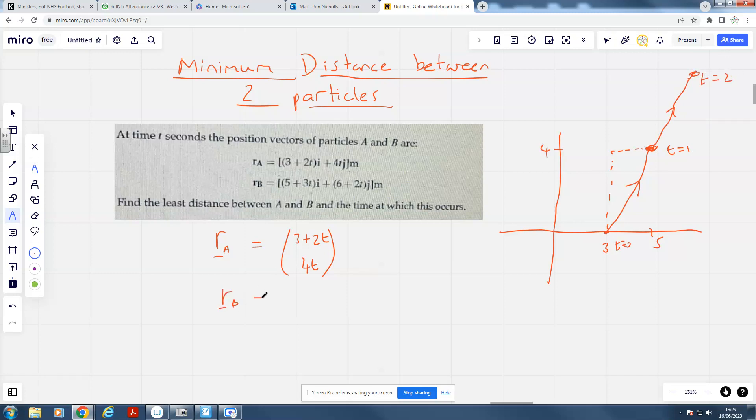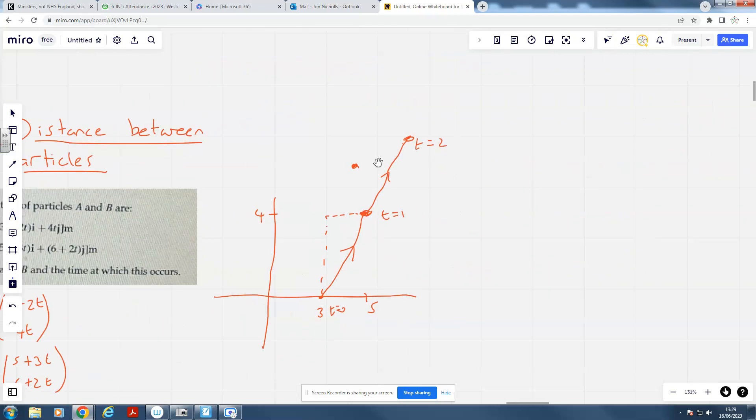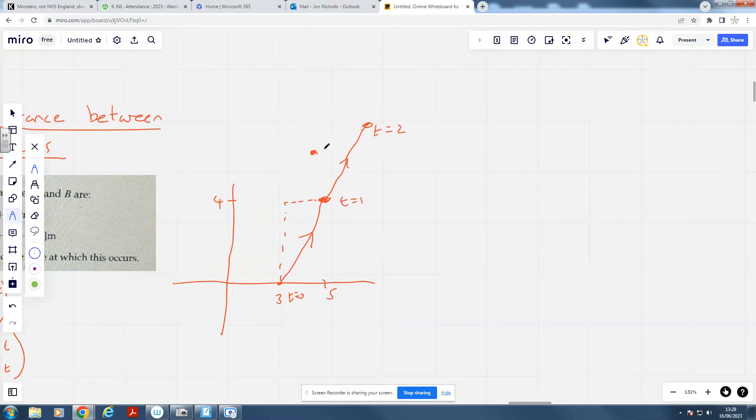Now, particle B similarly is doing 5 plus 3t and 6 plus 2t. And so when t is 0, it's starting at (5, 6) up here, but it's going 3 across, 2 up each time. But they won't necessarily collide, because they're objects - it's not like the lines will intersect. The lines showing the path that they take will intersect, but it won't necessarily be the case that they're in the same place at the same time. And so we want to find the point at which they are closest. It's quite a weird problem, isn't it?